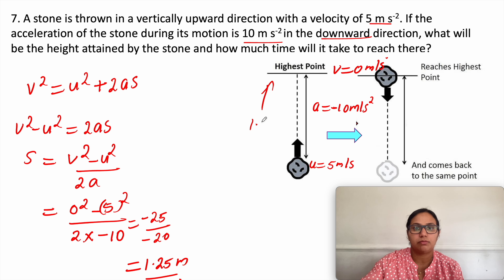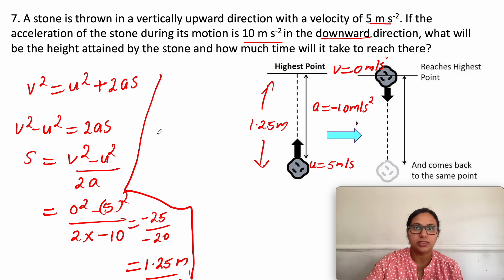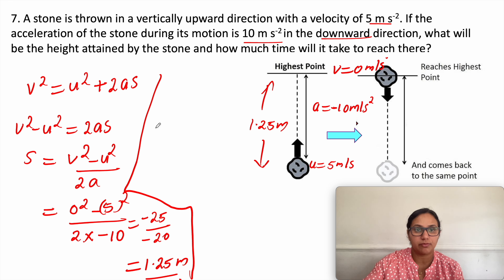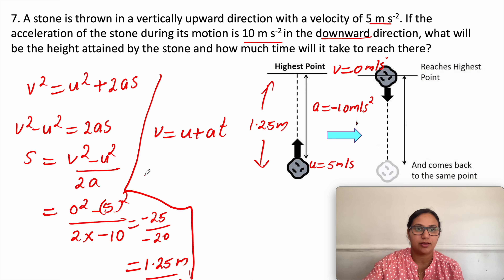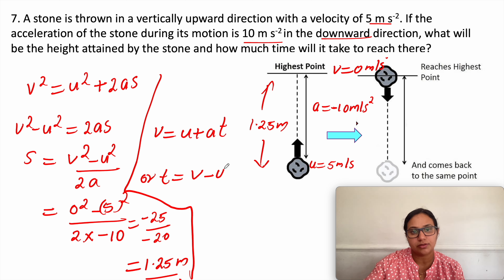Next, how much time will it take to reach there? We use the first equation of motion: v = u + at, which gives t = (v - u) / a.